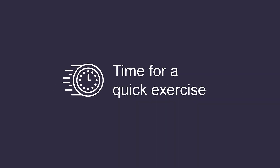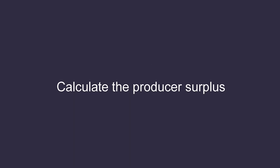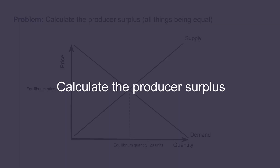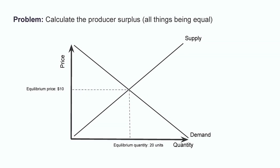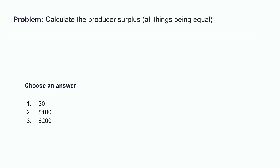Time for a quick exercise: calculate the producer surplus. Let's assume that the equilibrium price is $10 and the equilibrium quantity is 20 units. We must calculate the producer surplus, all things being equal.